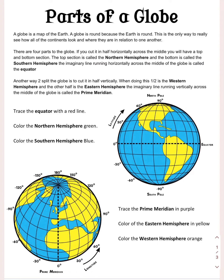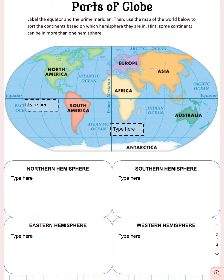For the next part of today's work, you're going to label the parts of the globe. You're going to identify some continents that are in different hemispheres, keeping in mind that some continents might be in more than one hemisphere. The northern hemisphere is everything above the equator, and the southern hemisphere is everything below the equator.